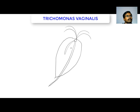The axostyle exits from the posterior end. Compared to Giardia lamblia, Trichomonas vaginalis has only one nucleus. Draw the nucleus at the anterior end. It also has a structure called the undulating membrane.